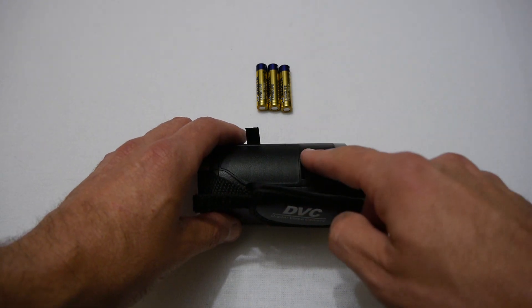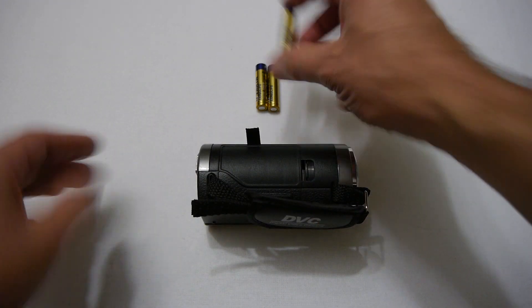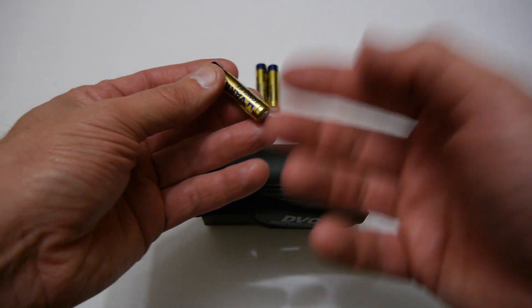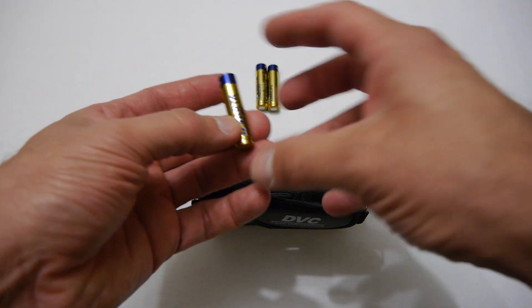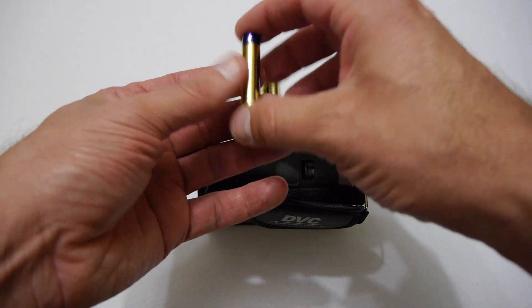Okay so next let's load the batteries into this unit. Now as you can see it just takes three AAA batteries. Now they're not included in the box so you just have to supply your own and there's no special rechargeable battery just normal AAA batteries.